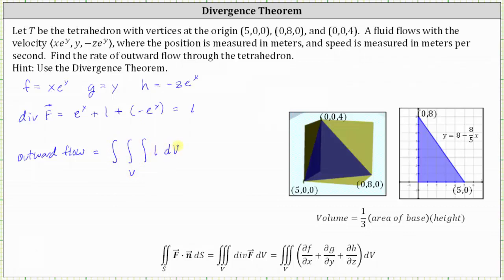We should recognize that because the integrand function is one, this triple integral is equal to the volume of the tetrahedron. Therefore it's going to be much easier to use the geometric formula to find the volume, rather than determine the limits of integration in terms of X, Y, and Z using the intersections of the blue plane and the X, Y, and Z planes.